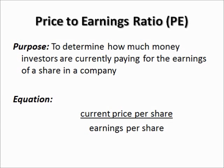The next common ratio we would like to talk about is the price-to-earnings ratio. The purpose of this ratio is to determine how much money investors are currently paying for the earnings of a share in a company — in other words, how much is an investor willing to pay for $1 of earnings? The equation is the current market price of the share divided by the EPS, the earnings per share, which we have just learned how to calculate.